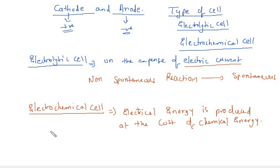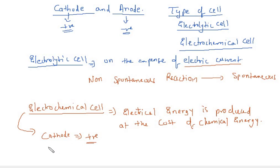So some students think that in an electrochemical cell, the cathode is positive in charge and the anode is negative in charge, whereas in an electrolytic cell the anode is positive in charge.